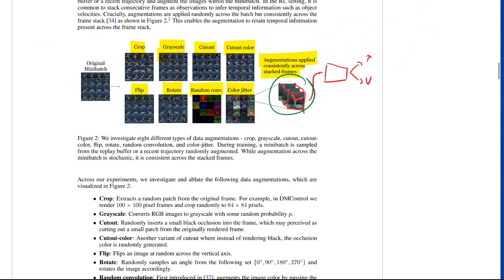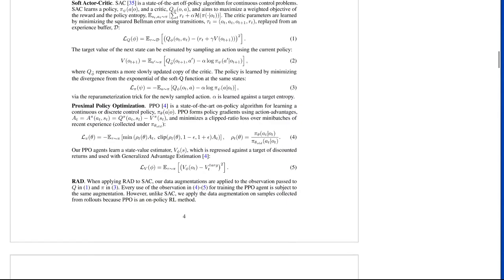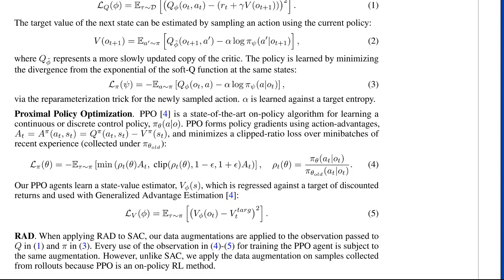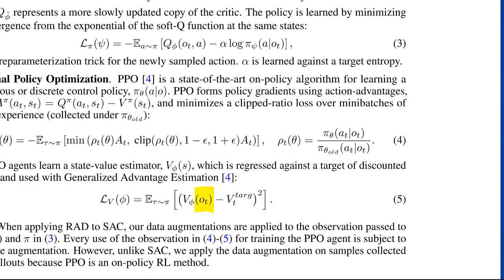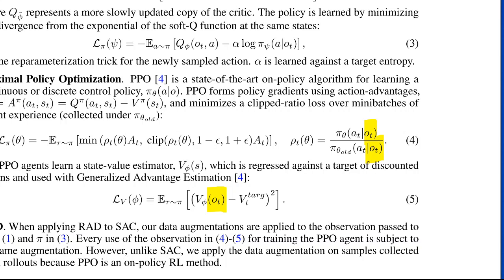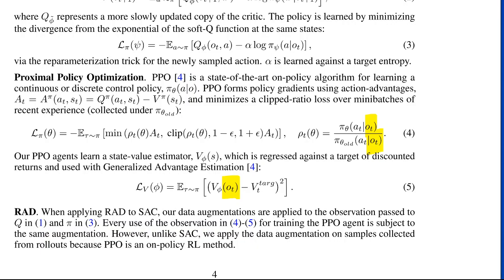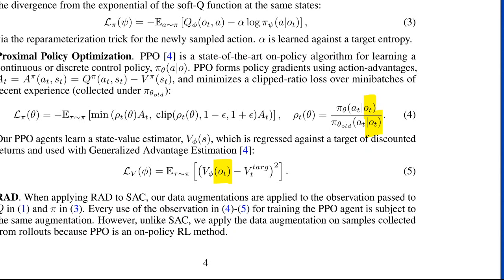So they formulate the classic proximal policy optimization here, which is an actor critic method. And the only time you have to really pay attention is when you plug the observation into these models, right here, then it needs to be the same augmentation. Sorry, the same observation. So that means the observation augmented with the same augmentation procedures. When you do this, when you do that, let's say, when applying RAD, which is the random data augmentation.